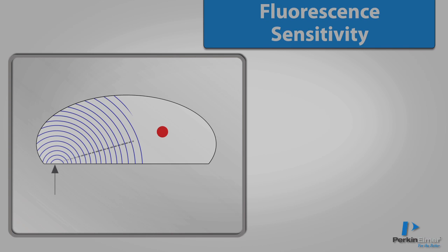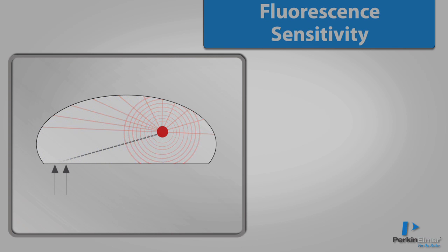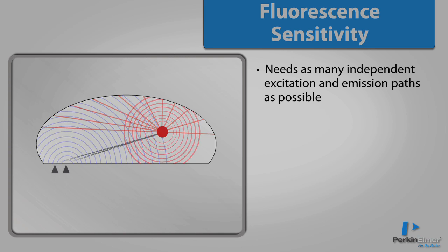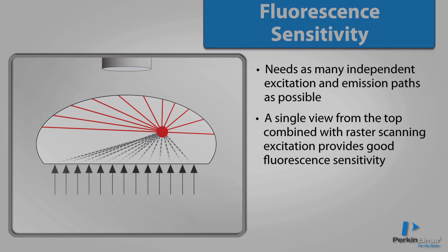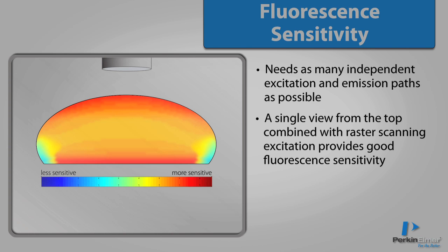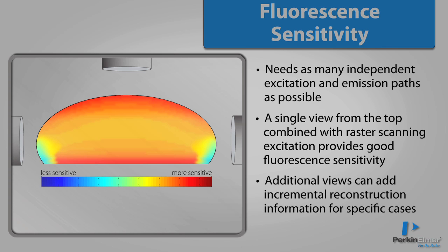For good 3D reconstructions, the instrument needs as many independent excitation and emission paths as possible. A single view from the top combined with raster scanning excitation provides good fluorescent sensitivity for most cases. Additional views can add incremental reconstruction information for specific cases, for example along the sides of the animal, but will limit instrument throughput and flexibility.